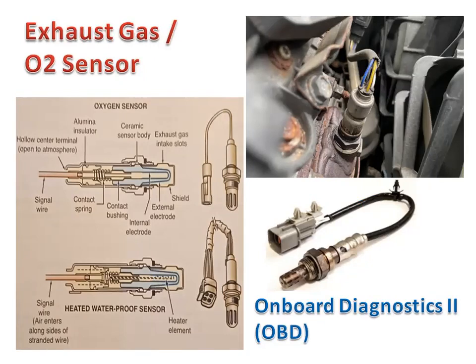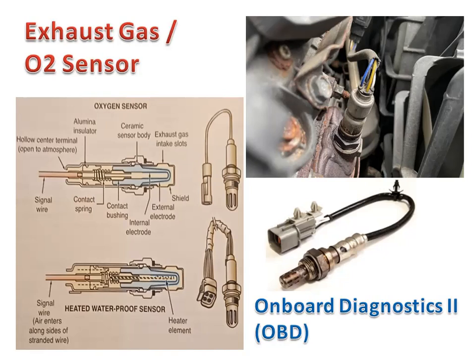The oxygen sensor is threaded into the exhaust manifold or exhaust pipe. OBD-II (Onboard Diagnostics 2) systems have oxygen sensors upstream and downstream from the catalytic converter. The upstream oxygen sensor is primarily used for fuel trim, while the downstream oxygen sensor is used for monitoring the efficiency of the catalytic converter. Fuel trim occurs when the computer increases or decreases injector pulse width based on information from the upstream oxygen sensor.